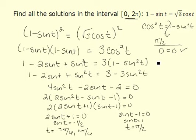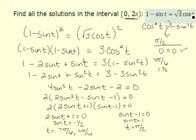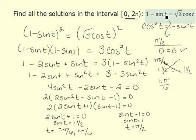Checking 7π over 6: the sine of 7π over 6 is equal to negative 1 half, and 1 minus negative 1 half is 1 and 1 half. The cosine of 7π over 6 is negative square root of 3 over 2. The square root of 3 times negative square root of 3 over 2 gives us negative 3 over 2, or negative 1 and 1 half. Therefore, 7π over 6 is not a solution. Checking 11π over 6: sine of 11π over 6 is negative 1 half, so again we get 3 halves on the left-hand side. Cosine of 11π over 6 is square root of 3 over 2, and multiplying by square root of 3 we get 3 halves. Therefore, 11π over 6 checks out.